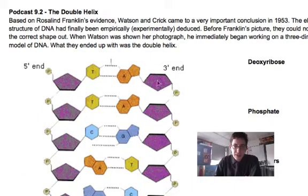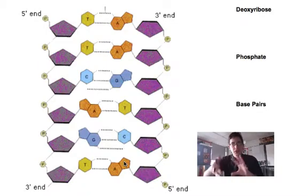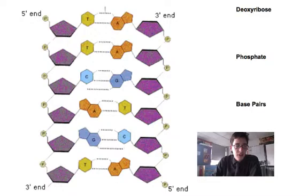This is a diagram of DNA, and it's been untwisted so we're looking at a flat portion of it. The first thing I want to point out is that there are these ends here: there's a 5' end and a 3' end.